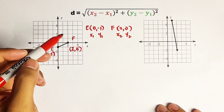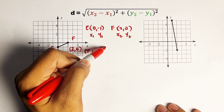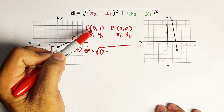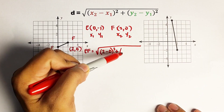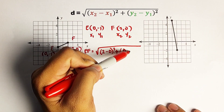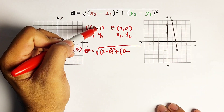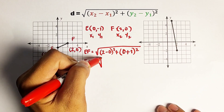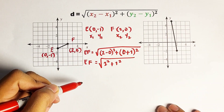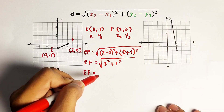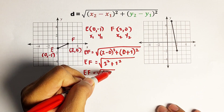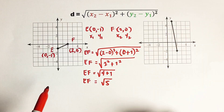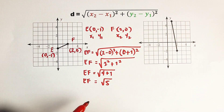So we can use the formula. EF is equal to the square root of: x sub 2 is 2, minus x sub 1 which is 0, squared. Plus y sub 2 is 0, minus y sub 1 which is negative 1 — since this is negative, multiplying gives plus 1 — squared. So EF equals the square root of 2 squared plus 1 squared, which is the square root of 4 plus 1, giving us the square root of 5. The distance between point E and point F is square root of 5 units.